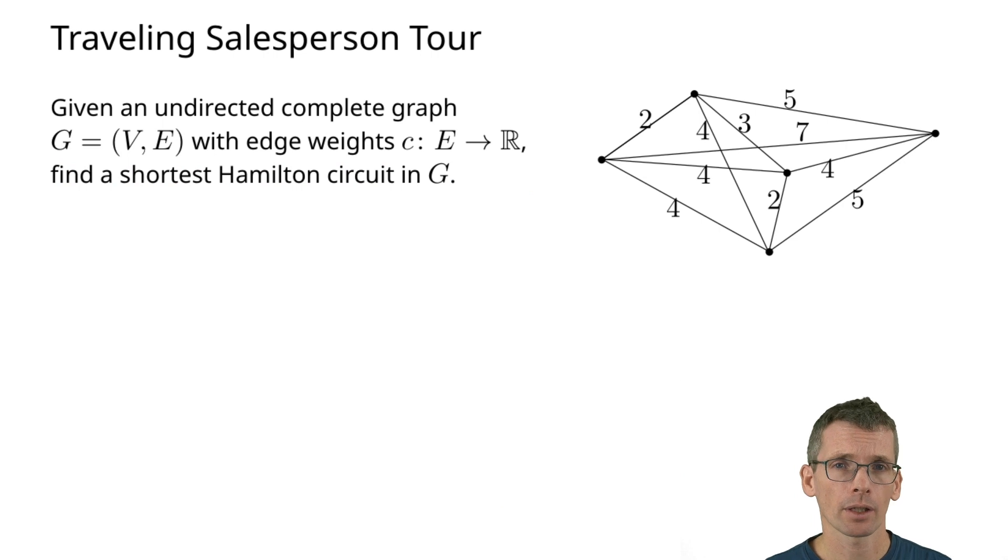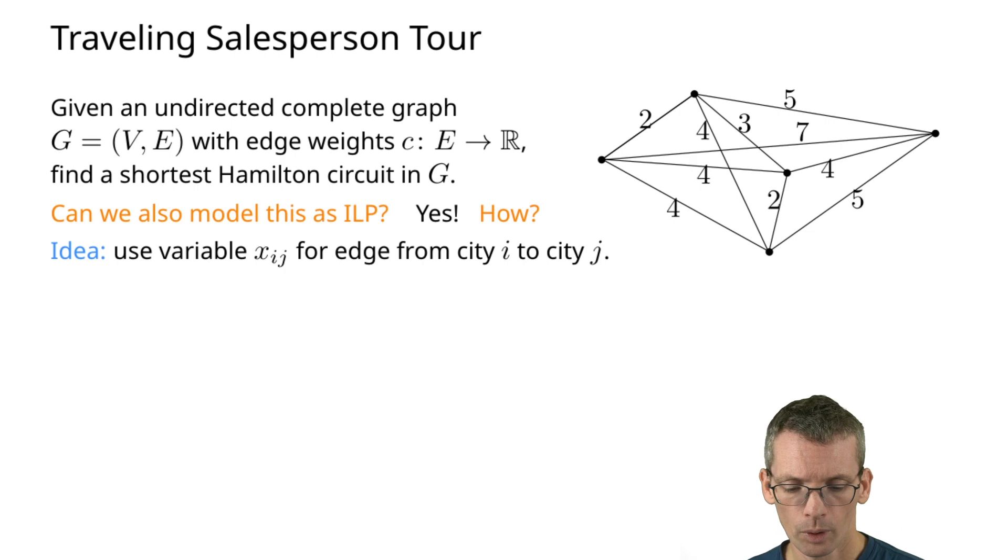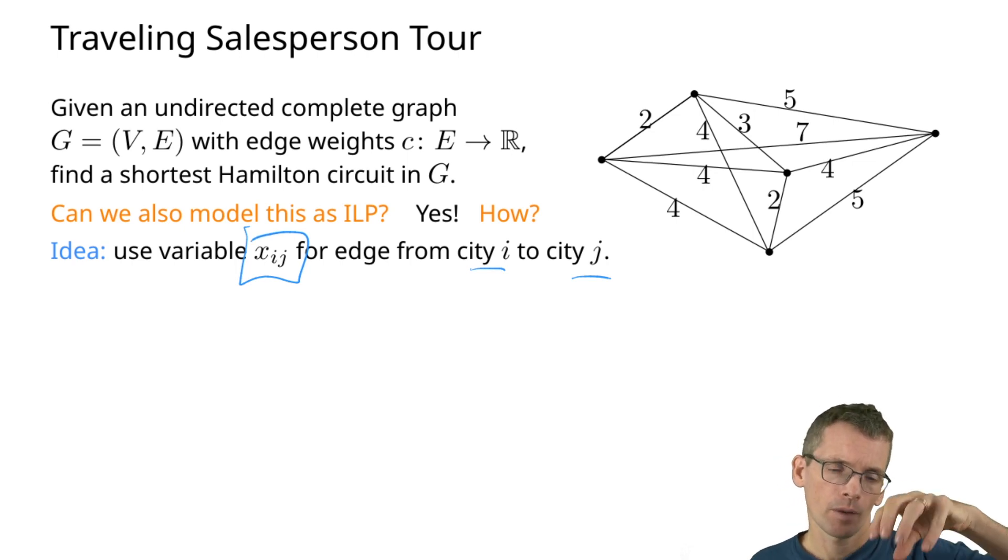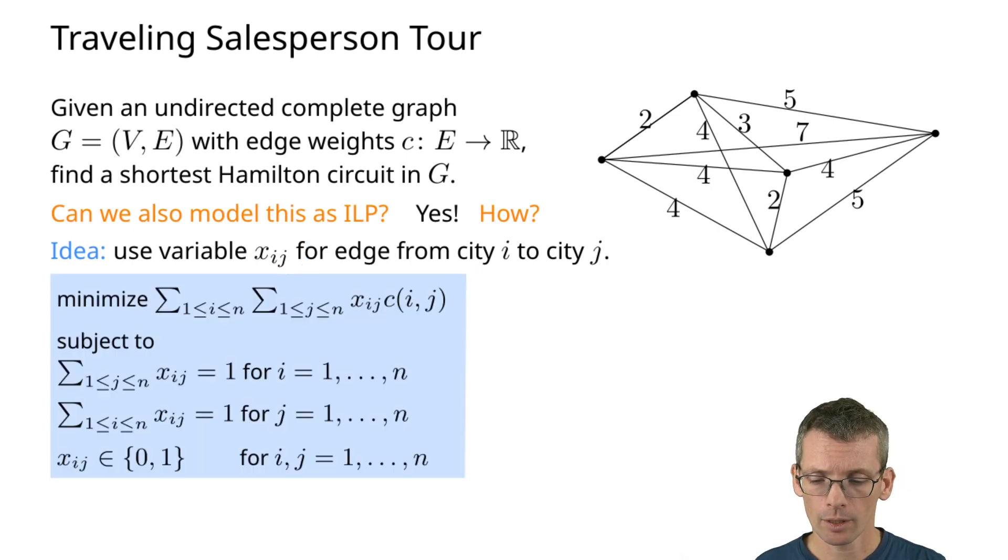The second problem we're going to look at is the traveling salesperson problem, TSP for short. We have an undirected complete graph with edge weights, and we want to find the shortest Hamiltonian circuit. Can we formulate this as an ILP? Of course, otherwise I wouldn't be talking about it. The variables that we're going to use are the following: for every pair of cities i and j, we have a variable x_ij which tells me that after visiting city i, the next city that I'm going to visit is city j. The objective function is simple: we're going to sum up over all of those x_ij's and then the weight of the corresponding edge. If I pick an edge, meaning that x_ij is 1, then I get the weight, otherwise I don't.